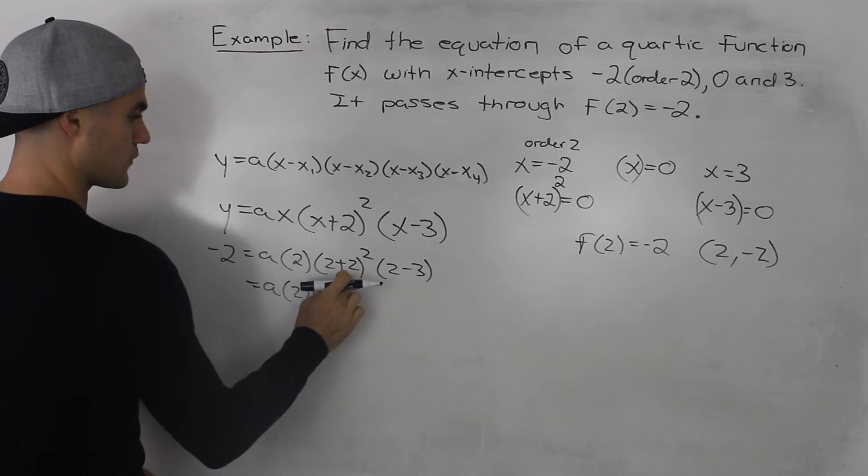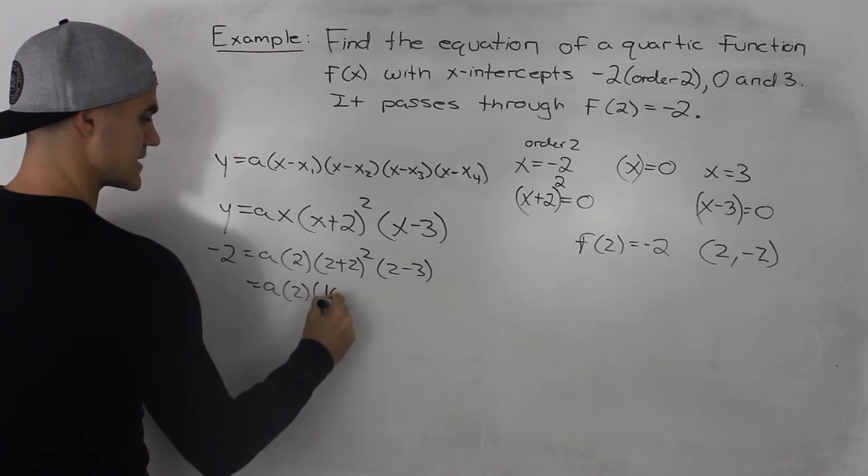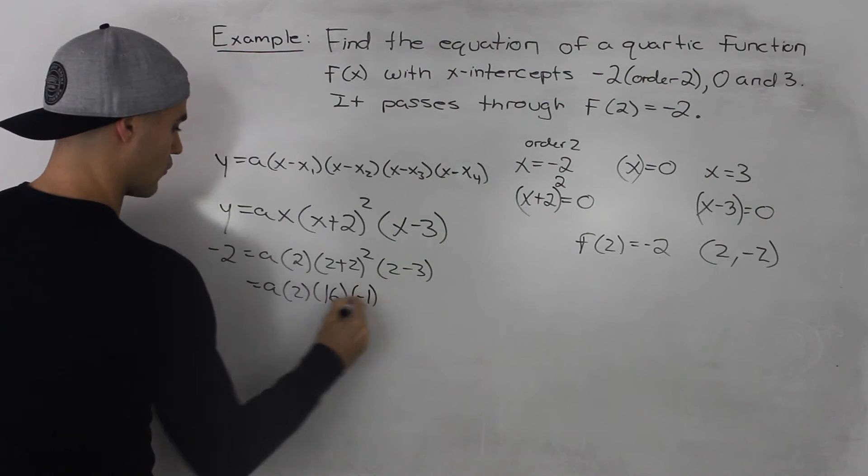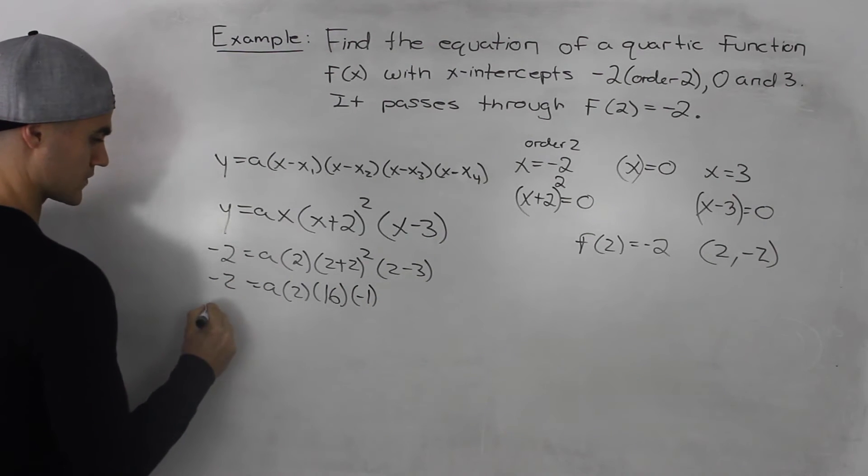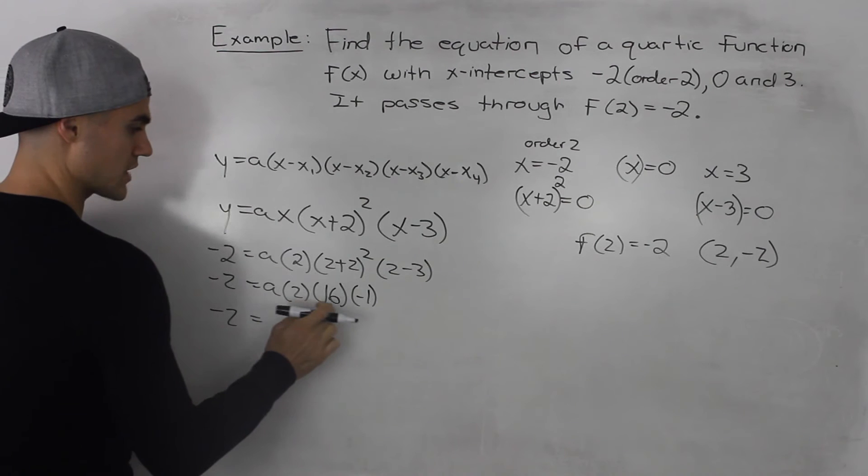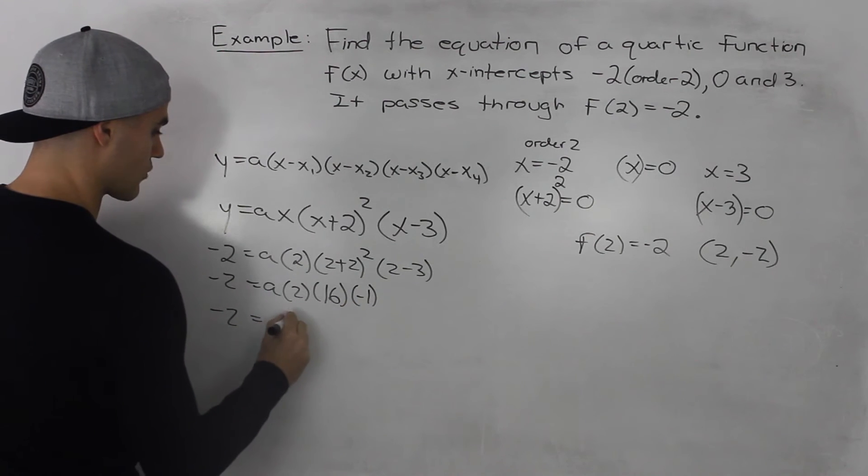2 + 2 is 4, 4² is 16, -1. This is -2. So -2 = 2 × 16 × -1 is -32.